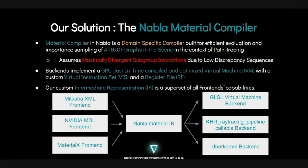The backends implement — except for the uberkernel backend, which we all know from the megakernels considered harmful paper — basically what Unreal Engine does, which is wrong for this. So the backends implement a just-in-time compiled and optimized virtual machine with a custom virtual instruction set and a register file. Our custom intermediate representation is a superset of all the frontends.